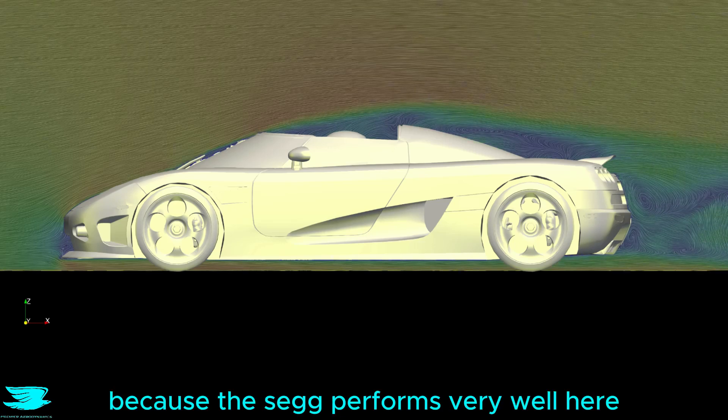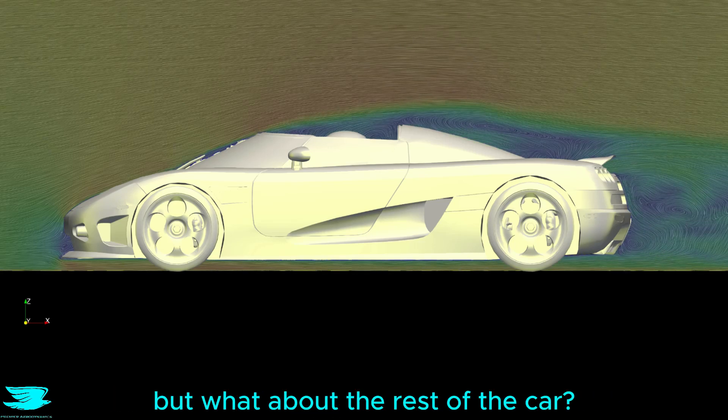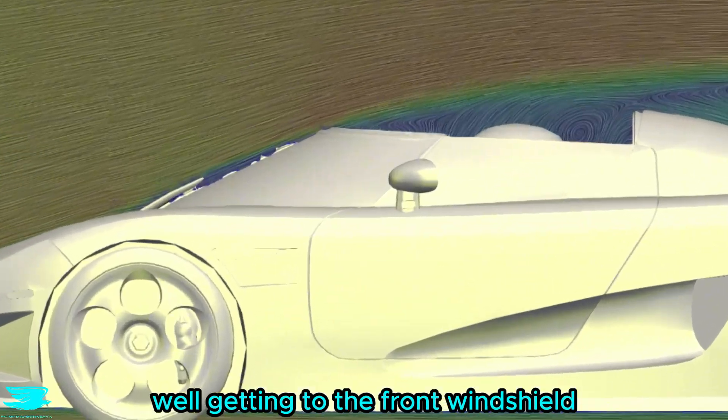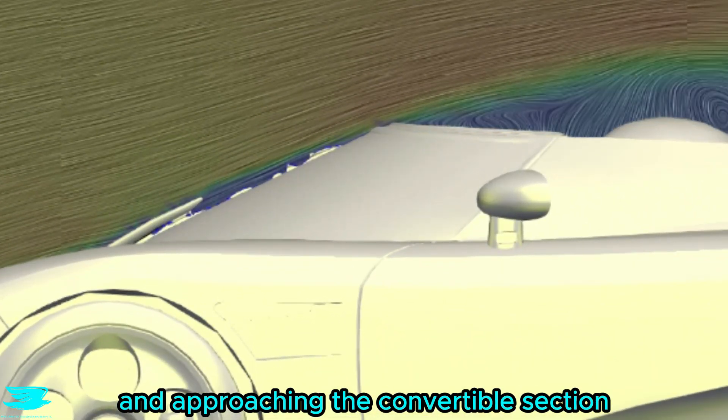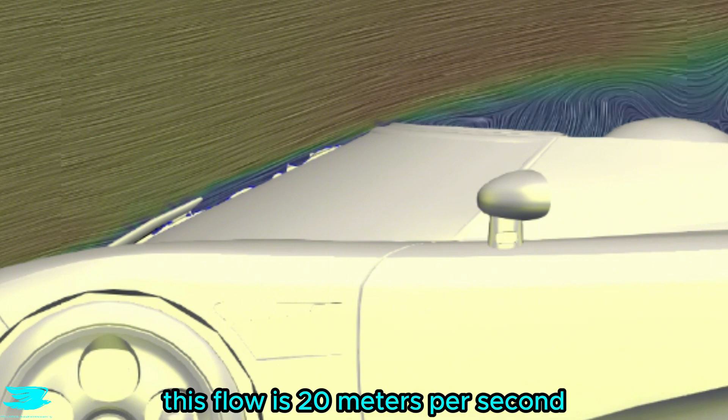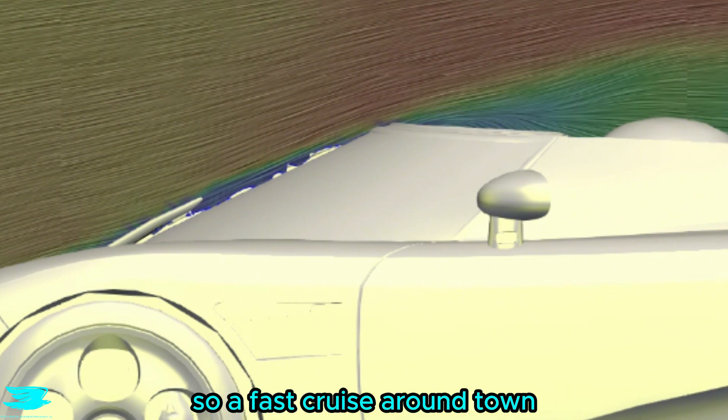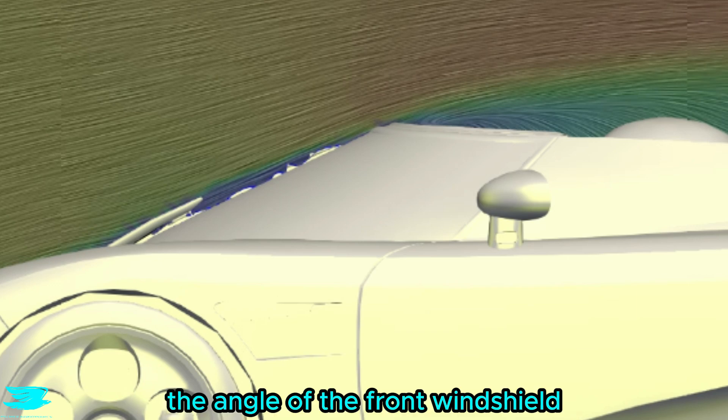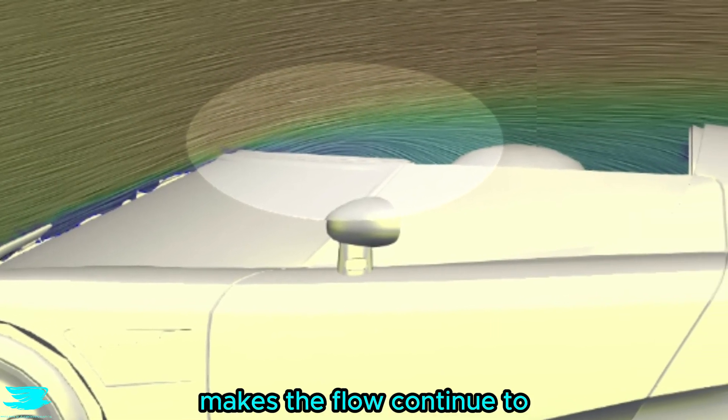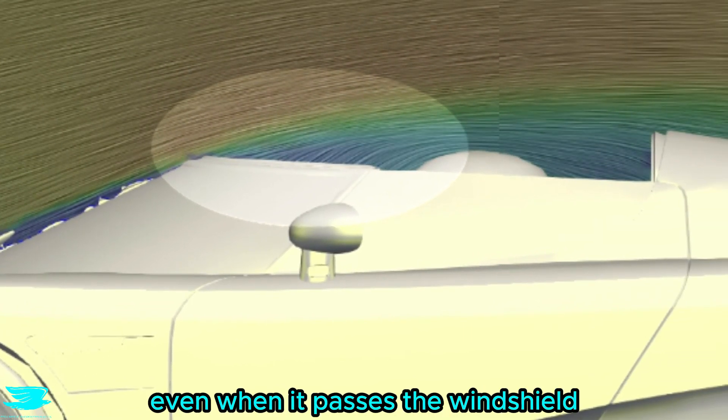That's great news because the seg performs very well here. But what about the rest of the car? Well, getting to the front windshield and approaching the convertible section, everything changes. This flow is 20 meters per second, so you fast cruise around town, but even at this speed the angle of the front windshield makes the flow continue to follow the same angle even when it passes the windshield.